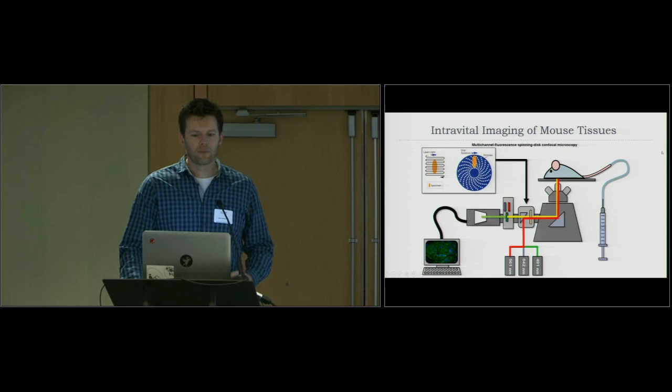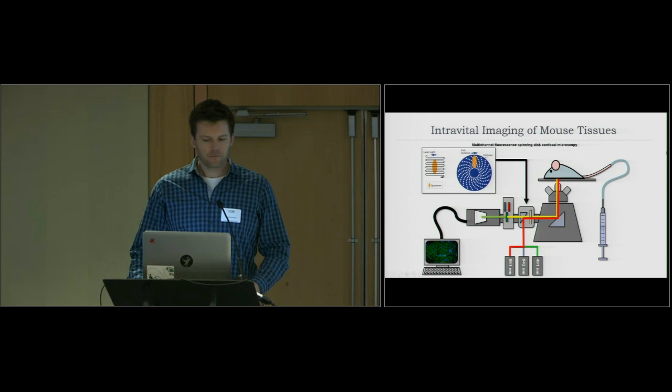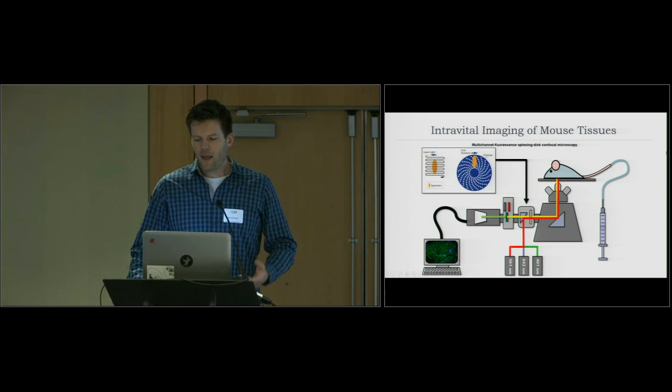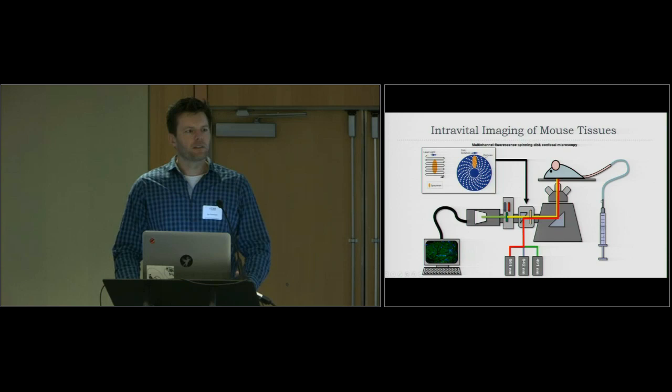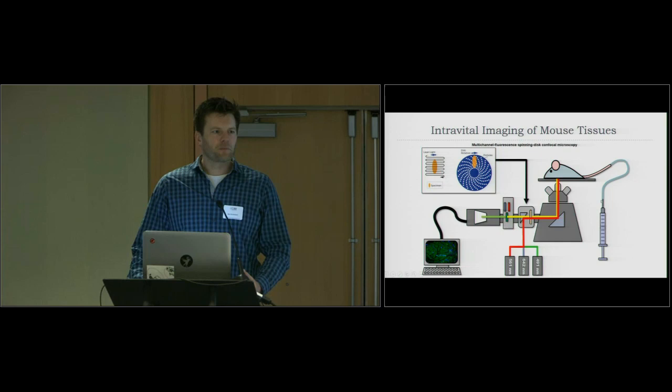Our lab uses intravital microscopy of living mice to visualize these processes. We take a mouse, put it under anesthesia — it's still alive — and expose the organ of interest. We insert a bloodline through which we can inject fluorescent antibodies or fluorescent bacteria, and then we can visualize these processes in vivo through a microscope. This microscope is special because it has a spinning disc, which allows for tracking fast-moving cells in vivo in a living mouse.